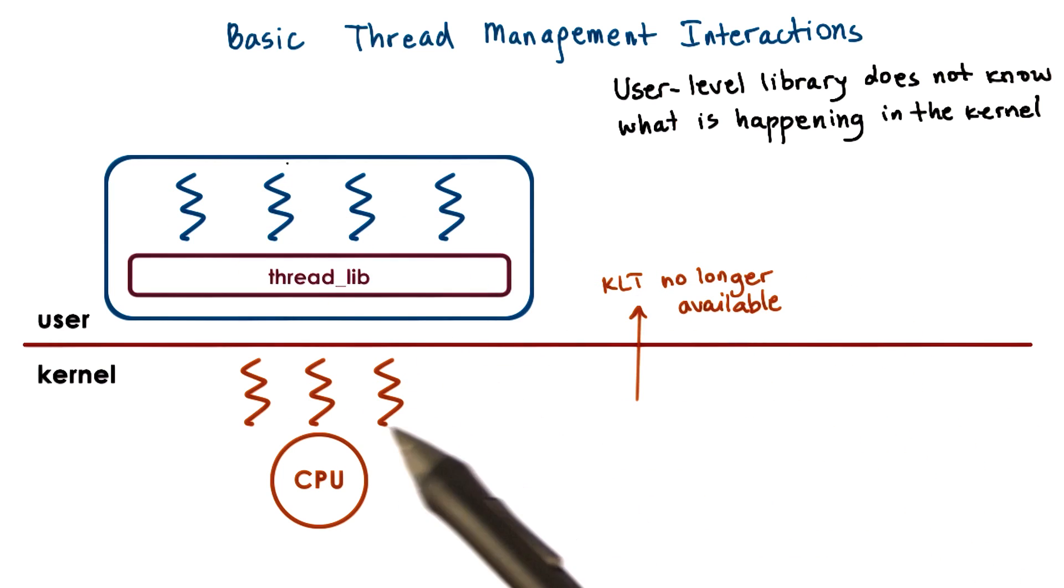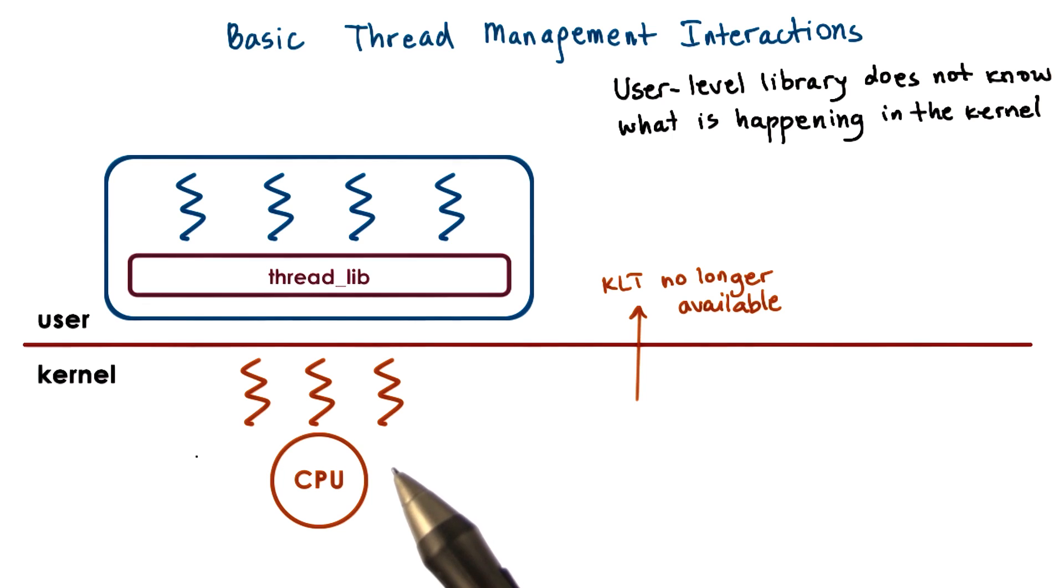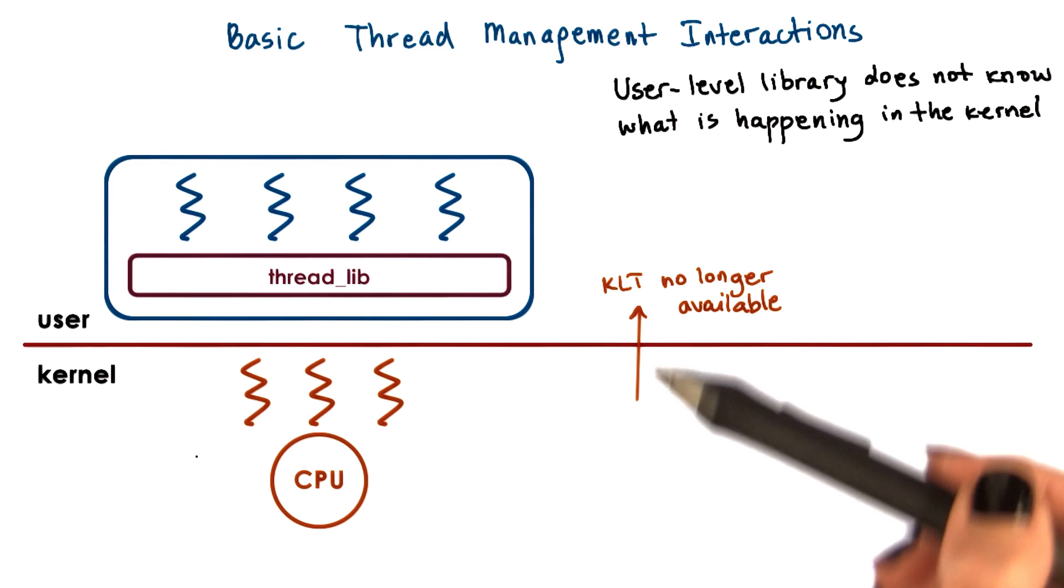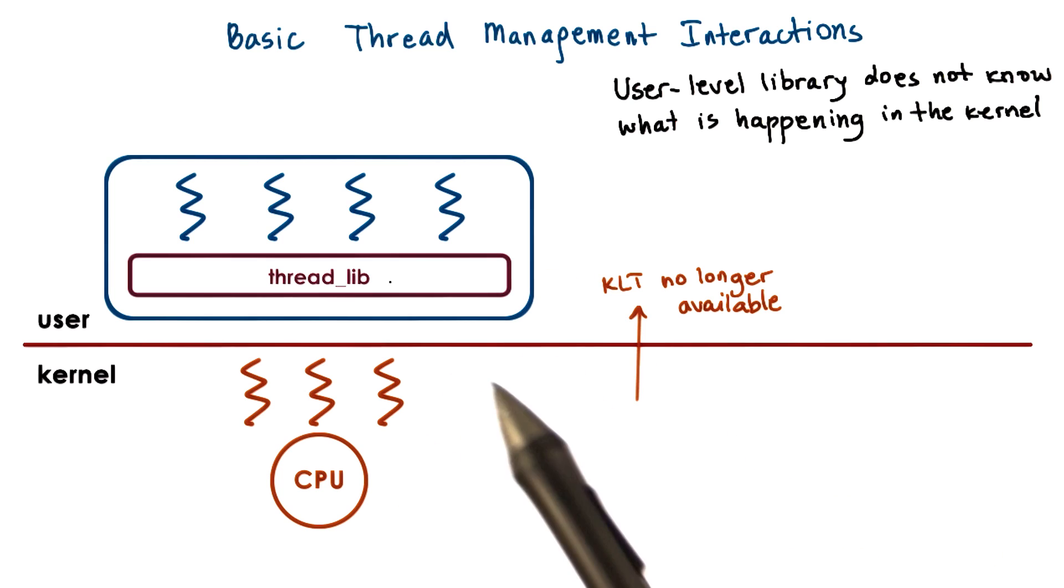Later, when the I/O operation completes, the kernel may notice that one kernel-level thread is constantly idle—the natural state of this application. The kernel can then inform the user-level library that it no longer has access to this kernel-level thread.